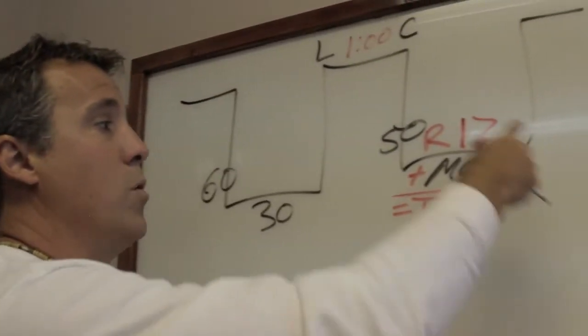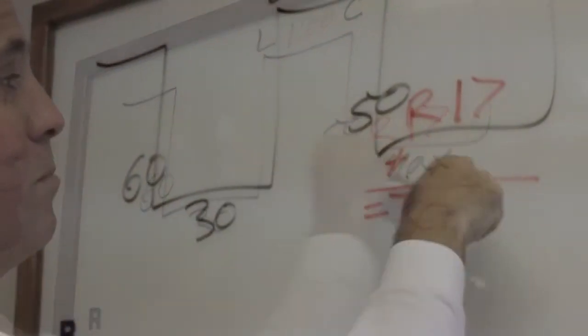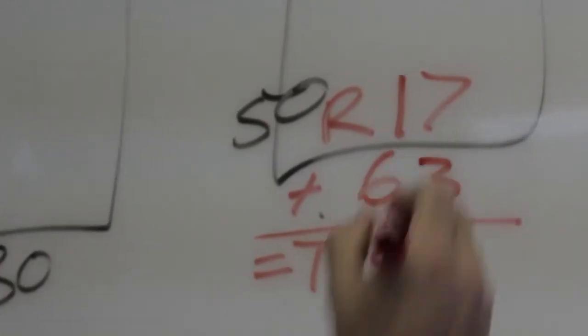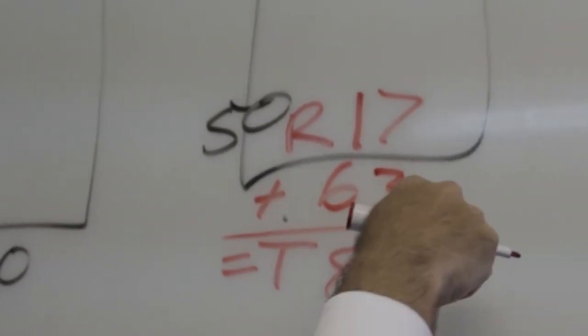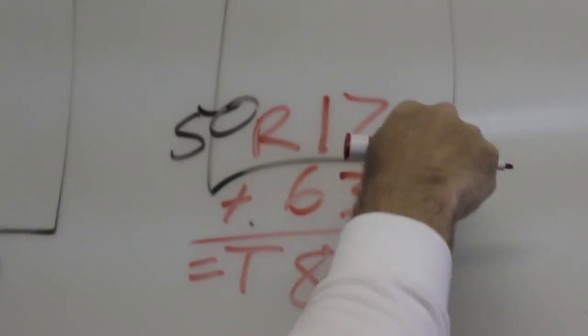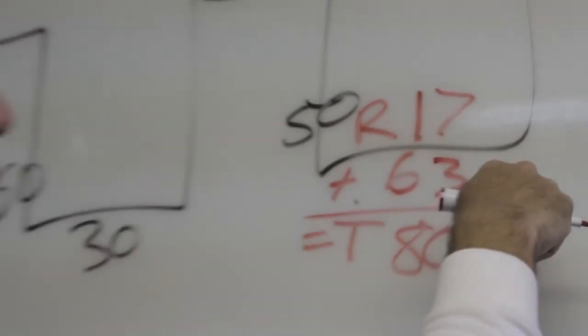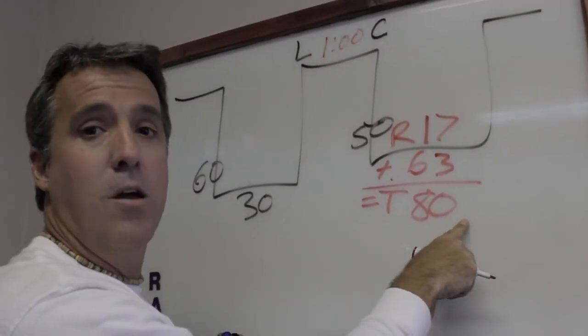To find the answer, all we do is take the difference. My difference would be 63 minutes. I can stay down 63 minutes because I have a residual of 17. These two added together may not exceed my bottom time.